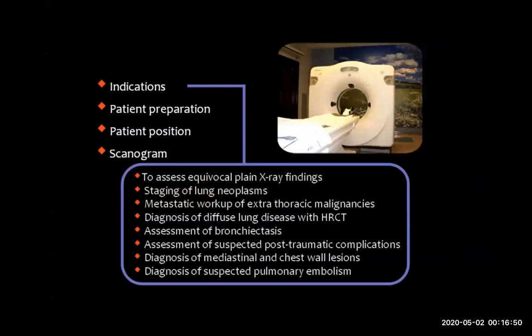We assess bronchiectasis — its localization, size, and volume. We assess suspected post-traumatic complications like vascular injuries, parenchymal injuries, fractures, pulmonary hemorrhage, and pneumothorax using CT scan for complicated cases. We also diagnose mediastinal and chest wall lesions — very important for accurate mediastinal assessment — and diagnose suspected pulmonary embolism by giving contrast for CT pulmonary angiography, especially in acute cases.